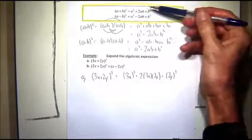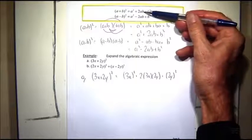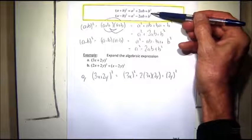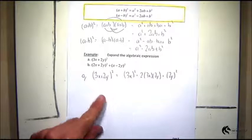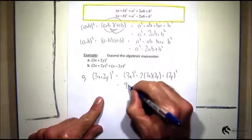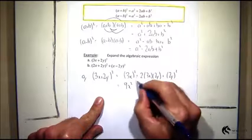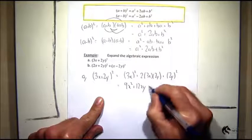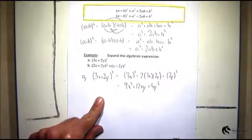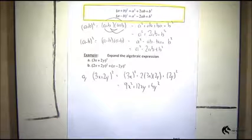First number squared, 2 times the first number and the second number, plus the last number squared. So (3x)² is 9x². 2 times 3 times 2 will be 12, so that's plus 12xy. And lastly, plus 4y². And there is my square of that particular binomial.